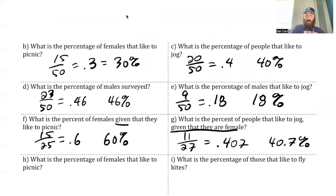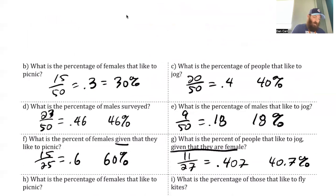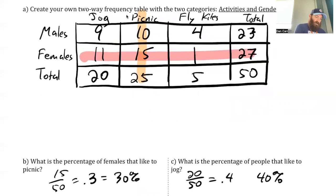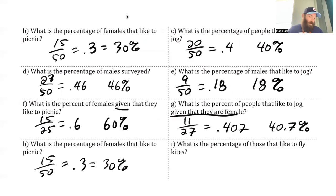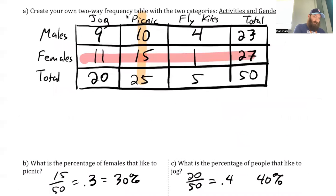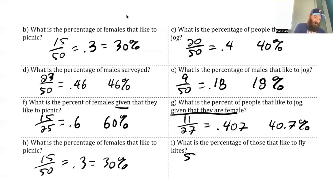What is the percentage of females that like to picnic? Since I didn't say a given statement here, we do 15 out of the 50, which is 30%. What's the percentage of those that like to fly kites? Five like to fly kites out of the total of 50 people — so 5 out of 50 equals 0.1, which is the same as 10% like to fly kites. Now that's it for our two-way frequency tables. Lots of times you have to fill in missing data like we did here. But bottom line is we are comparing two categories — a common one is males and females versus activities.